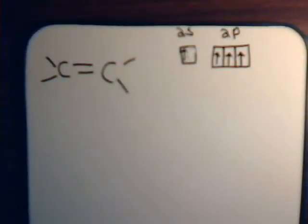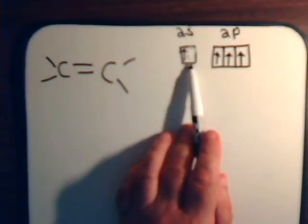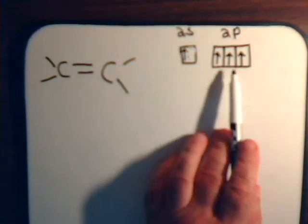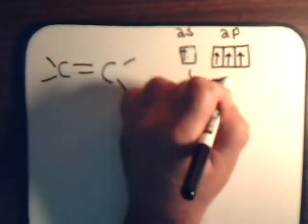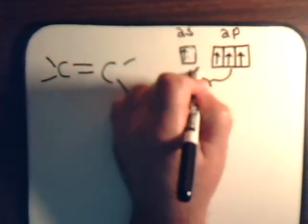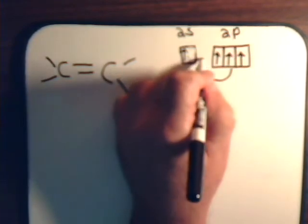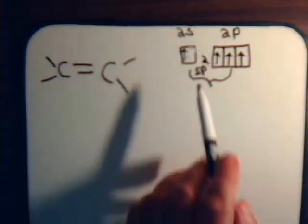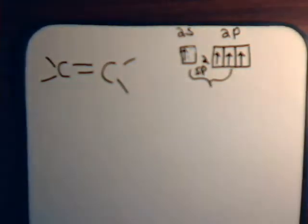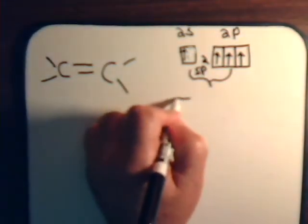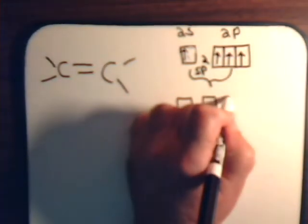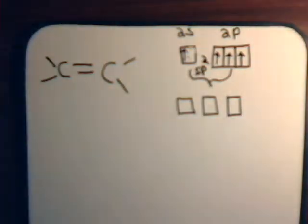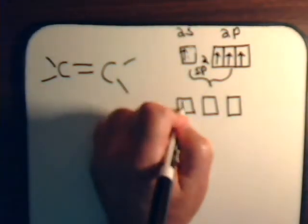And then, in the case of ethylene, one of the s orbitals combines with two of the p orbitals to provide us with sp2 hybridization. And again, there's three atomic orbitals that got combined together. Then, what emerges is three equivalent molecular orbitals. The sp2 ones, each has a single electron.